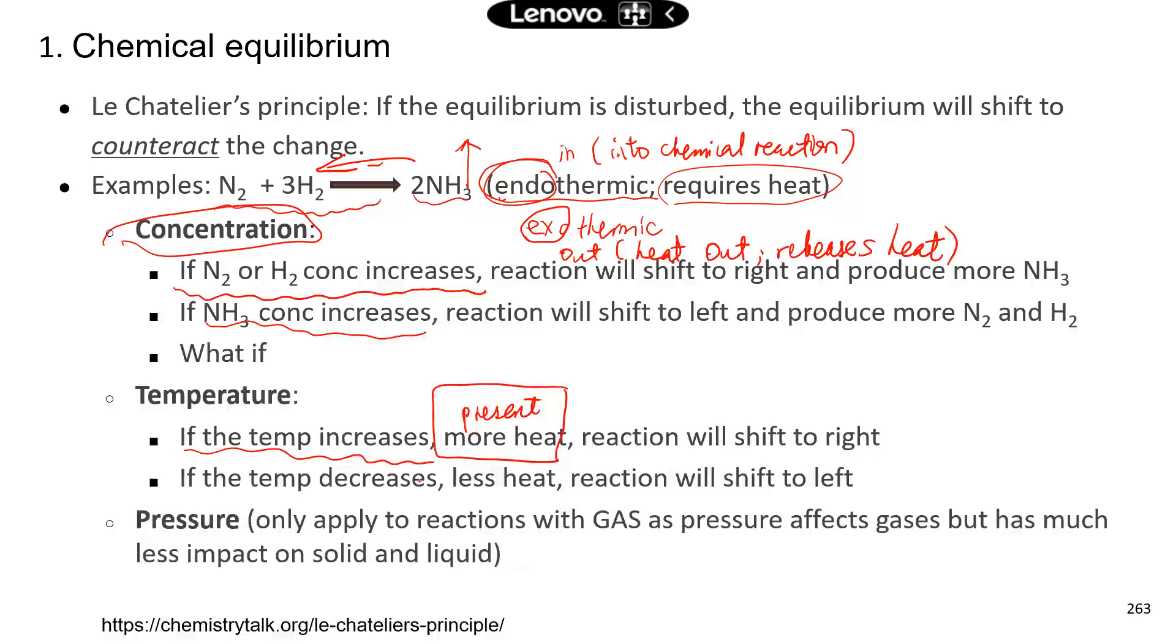Now, if you decrease the temperature, then the chemical reaction wants to generate heat. So how would you do to generate more heat? You go to the other direction. So you go from right to left, because when you go the opposite direction, you produce heat.